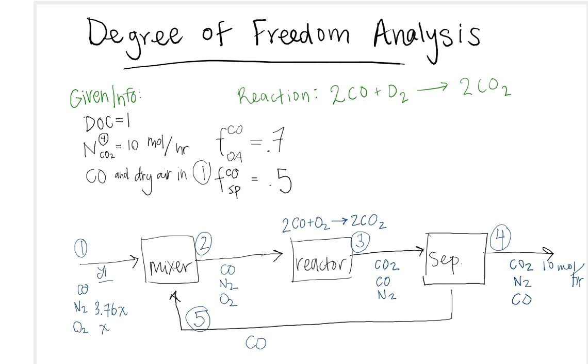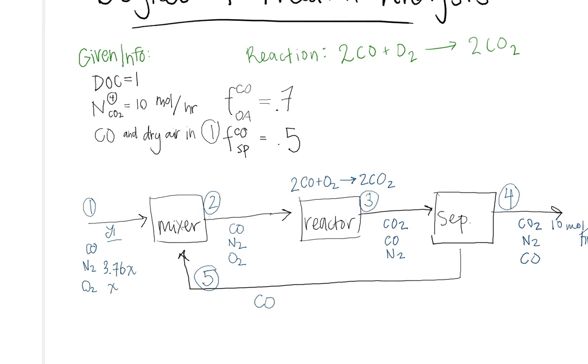So degree of freedom analysis is really helpful because it can help you decide which system to solve first and if you can actually solve the system. So the first step in solving this problem would be to separate this complicated system into its subparts. So we want to start off with the mixer. So draw your system boundary around the system that you're going to be evaluating.